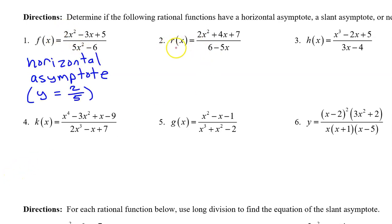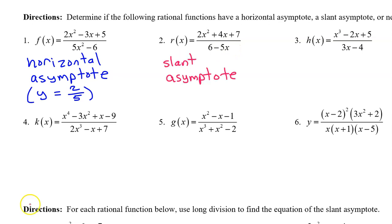Number two: the numerator has degree two, the denominator has degree one. Since the degree of the numerator is exactly one more than the denominator, there is a slant asymptote. We'd have to do long division to figure out what it is, and we will practice that later in the video.